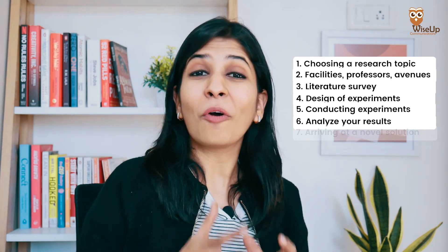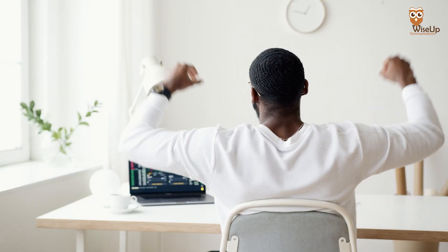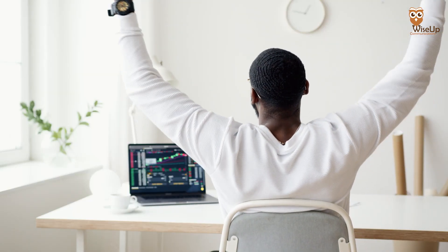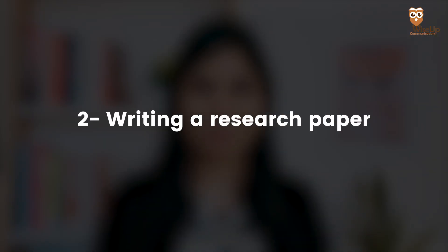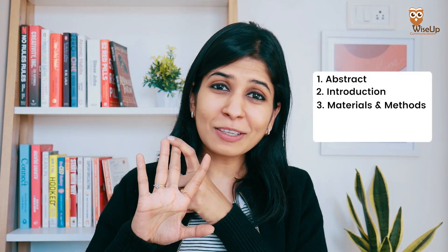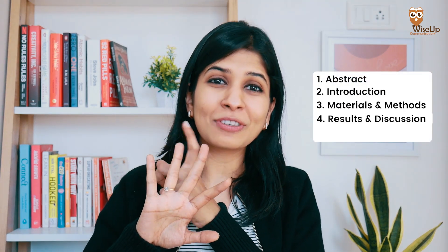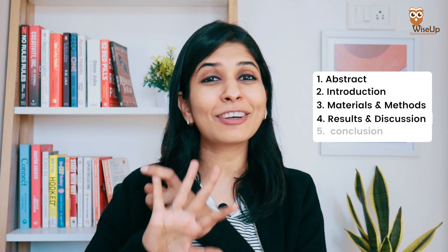After some time, with more reading, more experiments, and more learning, you will arrive at a solution that is new, novel, and that nobody has ever done before. Now with your research done, it is time to start working on your research paper. In a research paper, there are five important sections: the abstract, the introduction section, materials and methods, results and discussion, and finally the conclusion section.